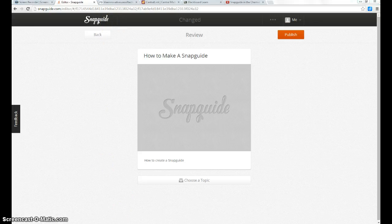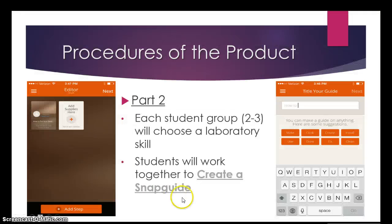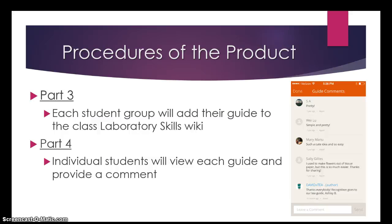Let's go back to the presentation. So that's part two — the students would work through creating a snap guide. After that task is complete, each student group will add their guide to the class laboratory skills wiki, and then each individual student can complete part four, which is to view each guide and provide a thoughtful and meaningful comment.